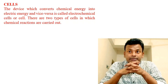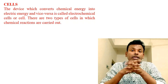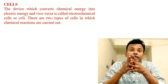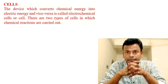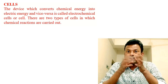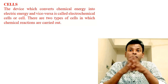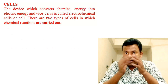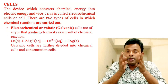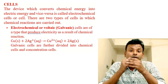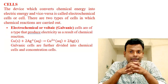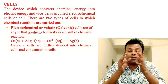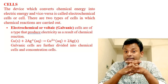The device which converts chemical energy into electrical energy and vice versa is called an electrochemical cell. There are two types of cells: electrochemical or voltaic or galvanic cells — which are of a type that produce electricity as a result of chemical reactions.